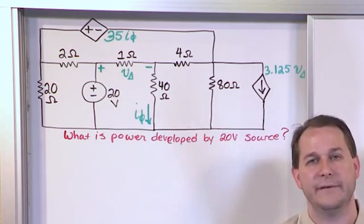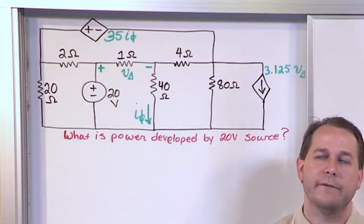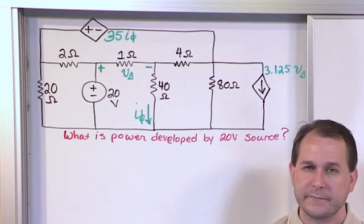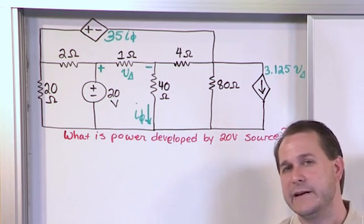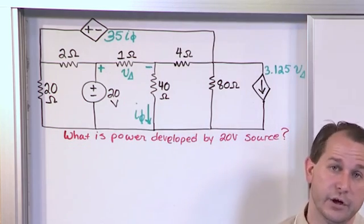So P is equal to IV, right? We've talked about that. So we need to find this current. So we've discussed in the past that once you know the node voltages in a problem, then by definition you can calculate everything else.